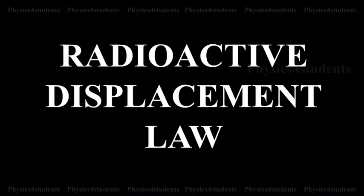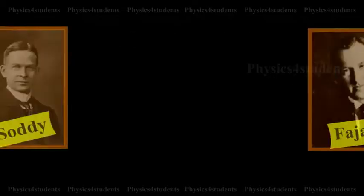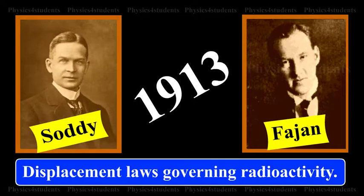Radioactive Displacement Law. During a radioactive disintegration, the nucleus which undergoes disintegration is called a parent nucleus, and that which remains after the disintegration is called a daughter nucleus. In 1913, Soddy and Fajans framed the displacement laws governing radioactivity.